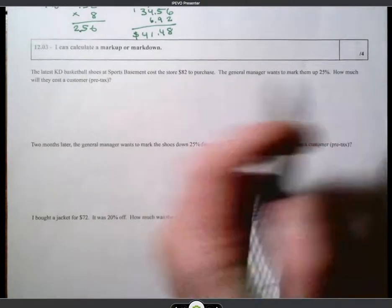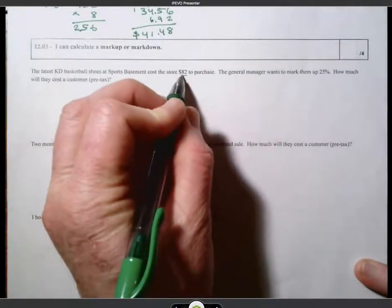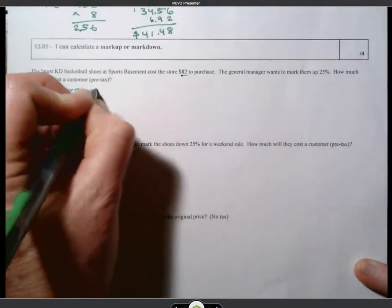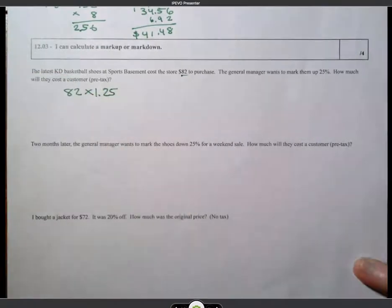So if I mark something up 25%, we can actually multiply 82 by 1.25. Right?